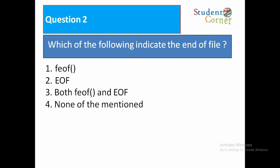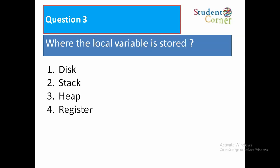Which of the following indicate the end of the file? Option one: f_eof, option two: eof, option three: both f_eof and eof, option four: none of the mentioned. So the answer is both f_eof and eof. Question number three: Where is the local variable stored? Option one: disk, option two: stack, option three: heap, option four: register. Obviously it is stored in stack.